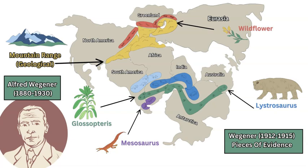He also included geology records through various mountain ranges in North America, Greenland, Scandinavia, the UK and also in Western Africa, and looked at glacial deposits through areas of Antarctica, South America, Africa, India and Australia. All these pieces of evidence suggested that during a time in geologic history around 250 million years ago these continents were connected, they were joined up together.